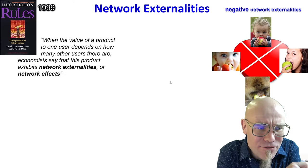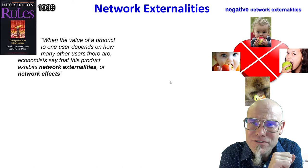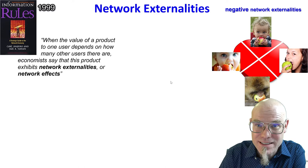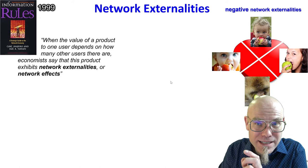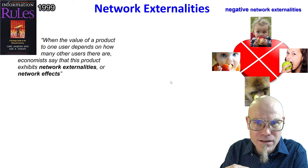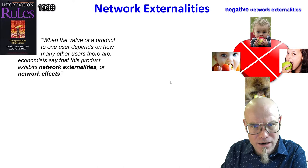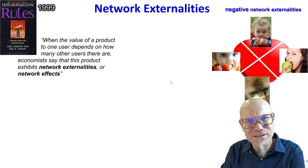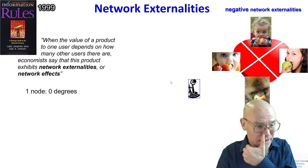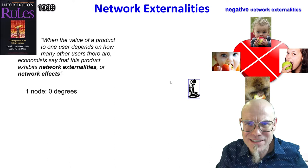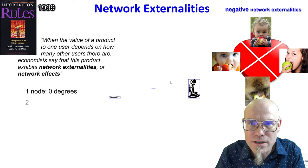Funny enough, what Shapiro and Varian explained is that when it comes to information and the digital, we don't have negative network externalities — we have positive network externalities. Positive network externalities means that the value of the product increases the more users there are. That really baffled economists, because that's not how they traditionally think. The more people try to eat the apple, the more valuable the apple gets — how does that compute?